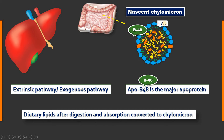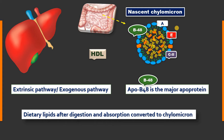When synthesized from the intestinal mucosal cell, the nascent chylomicron has apolipoprotein A1, because A1 is synthesized from the intestinal mucosal cell and liver. Once the nascent chylomicron is present in the circulation, it acquires two apolipoproteins from HDL: apolipoprotein E and apolipoprotein C2. It also acquires C1 and C3, but C2 plays a very important role in chylomicron metabolism. These apoproteins are originally synthesized by the liver.